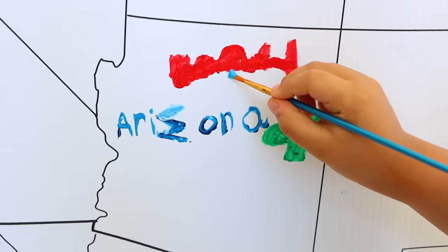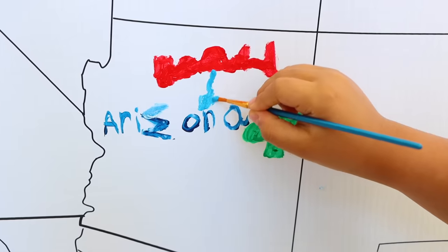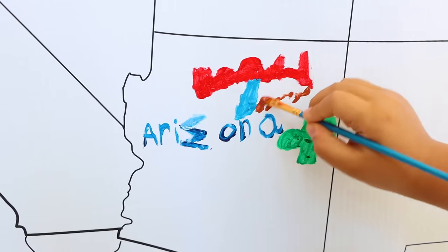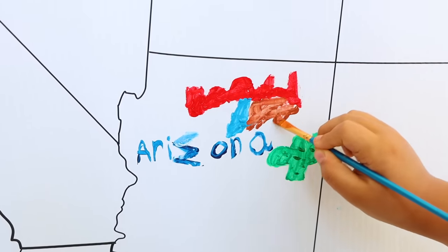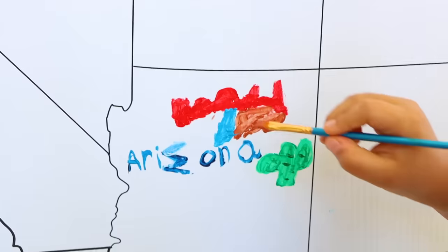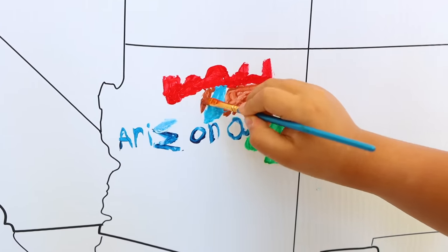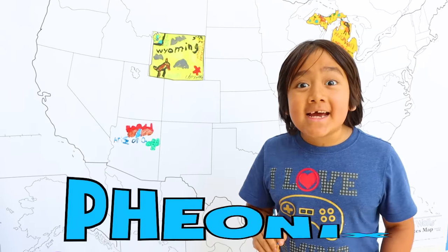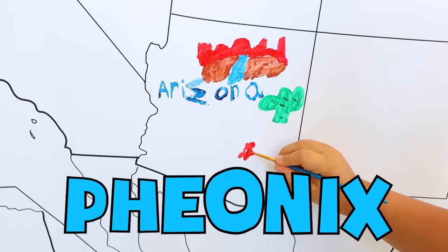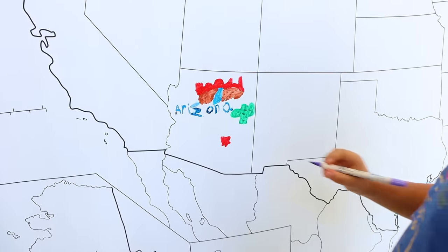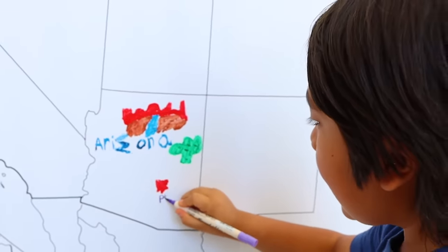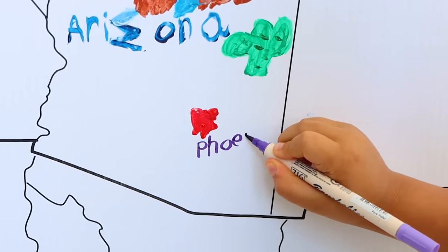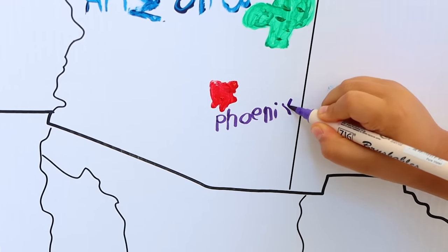Next I'm going to draw the lake. Now I'm going to put this part right here, filling in the rest of the mountain. The capital of Arizona is Phoenix, located right here. I'm going to spell Phoenix. P-H-O-E-N-I-X.